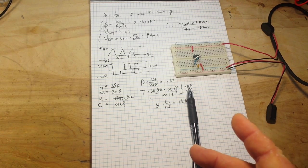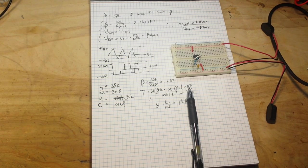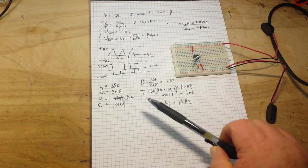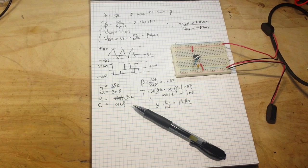So now you know not only how to make the circuit, but how to get the frequency you want out of the circuit, and why it does what it does.